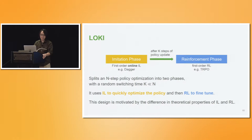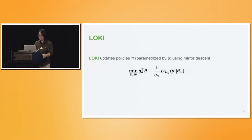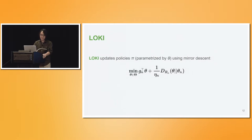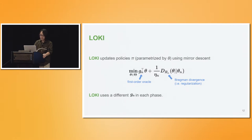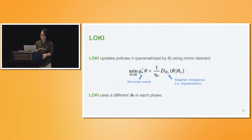This design is motivated by the differences between imitation learning and RL. LOKI is a first-order update algorithm: in each iteration, you receive an update direction from a first-order oracle, then pick a Bregman divergence as regularization and solve this mirror descent proximal map to update the policy. You use this update rule across both phases — the imitation phase and the RL phase — with the only difference being how you pick the first-order oracle.